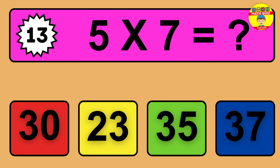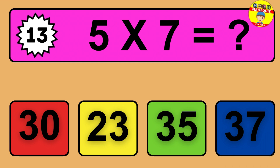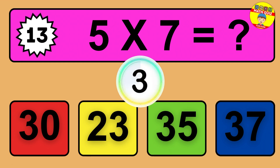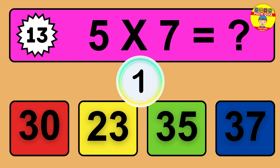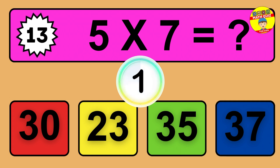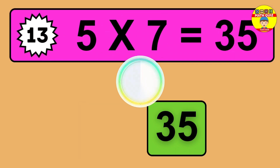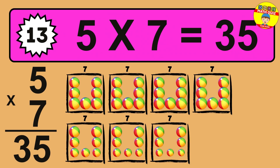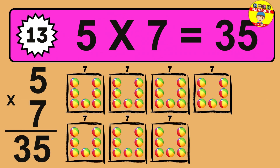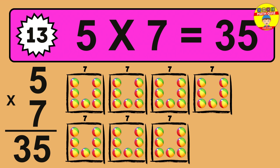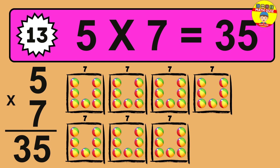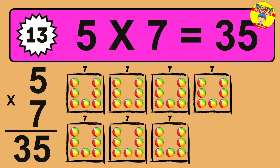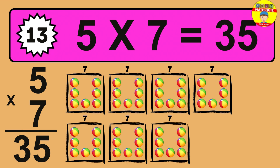Question 13. 5 times 7 equals what? The answer is 5 times 7 is 35. To calculate, we have 5 groups with 7 balls each one. So how many balls do we have? 35 balls.